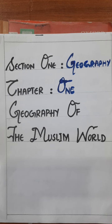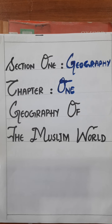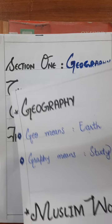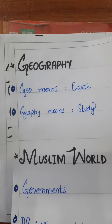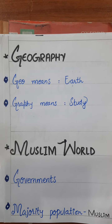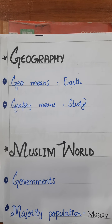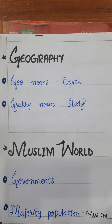In this unit, first of all I will explain what is meant by geography and then what is meant by the Muslim world. So, geography: the word 'geo' means earth and 'graphi' means study. So geography means the study of earth.